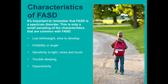These are some of the characteristics that you'll find that someone with FASD could have: low birth weight, slow to develop, irritability or anger, sensitivity to light, noise, touch, trouble sleeping, hyperactivity, and others. These characteristics can show up at different stages of life. For example, you might notice irritability in an infant, but they may not show hyperactivity until they're a toddler or later in school.